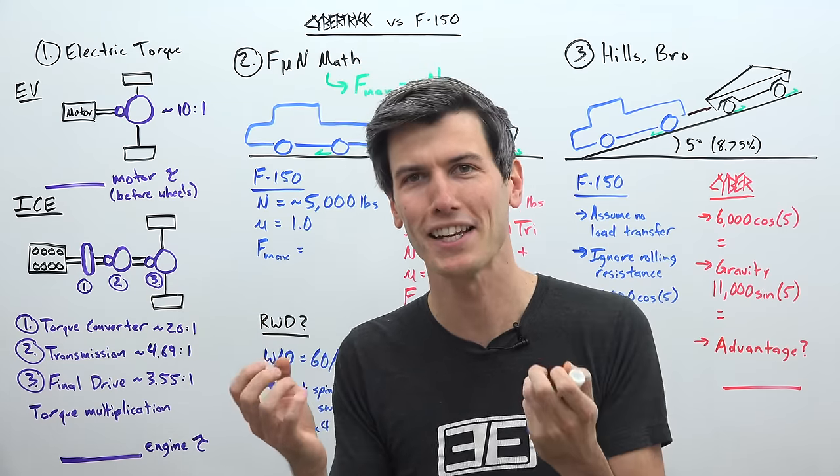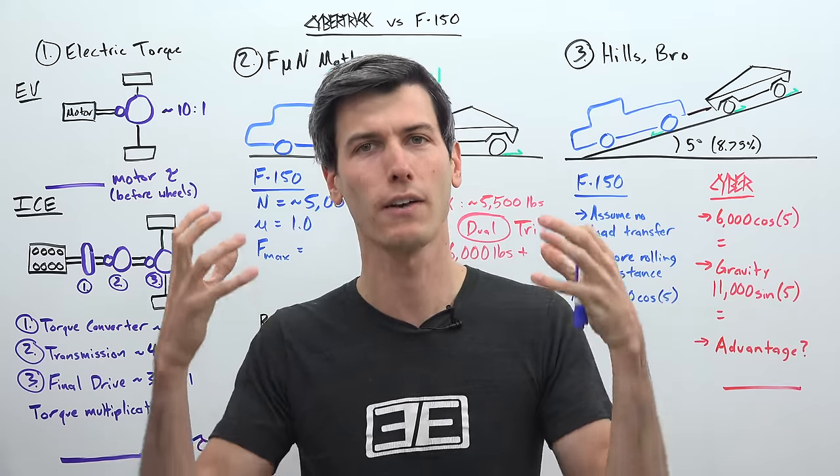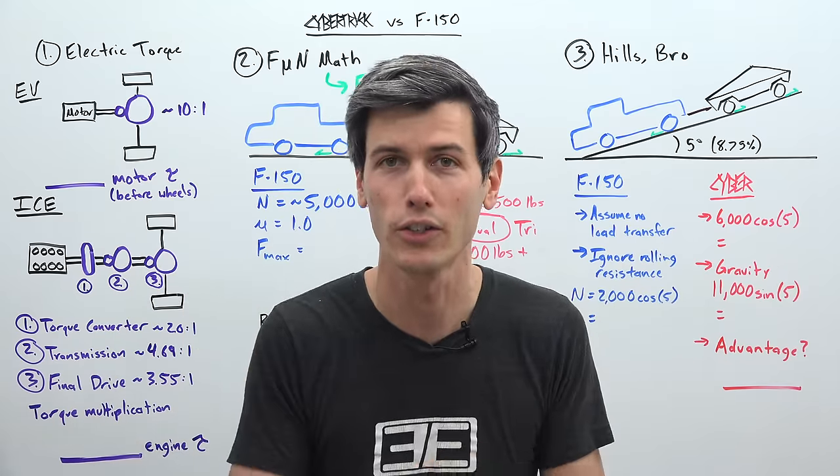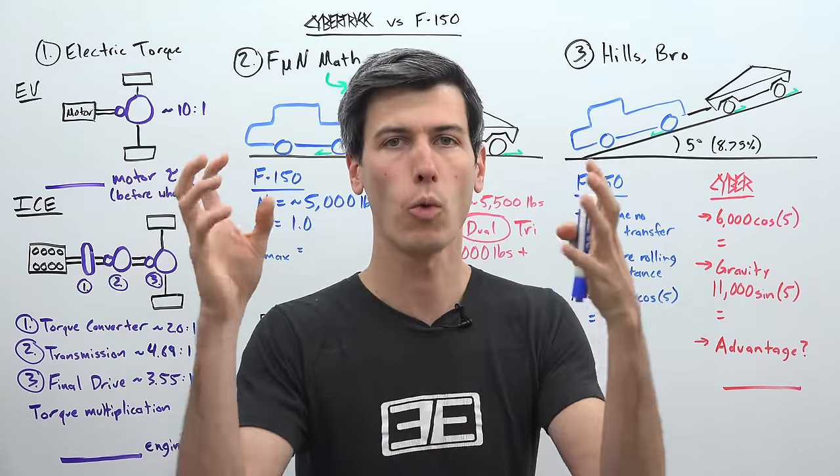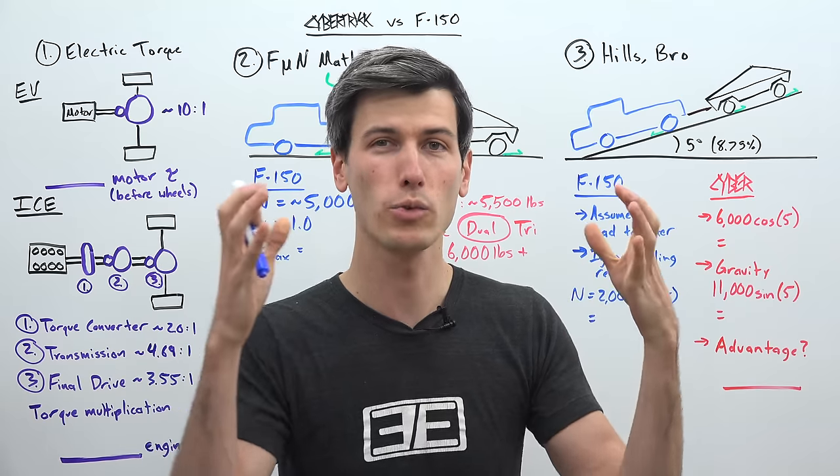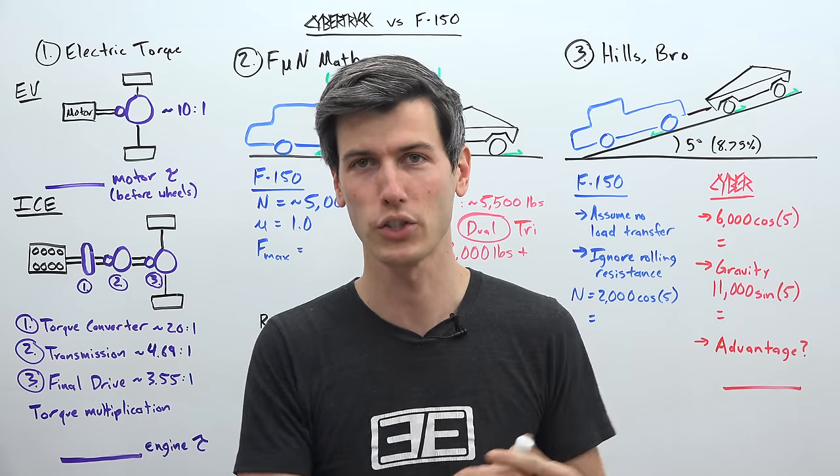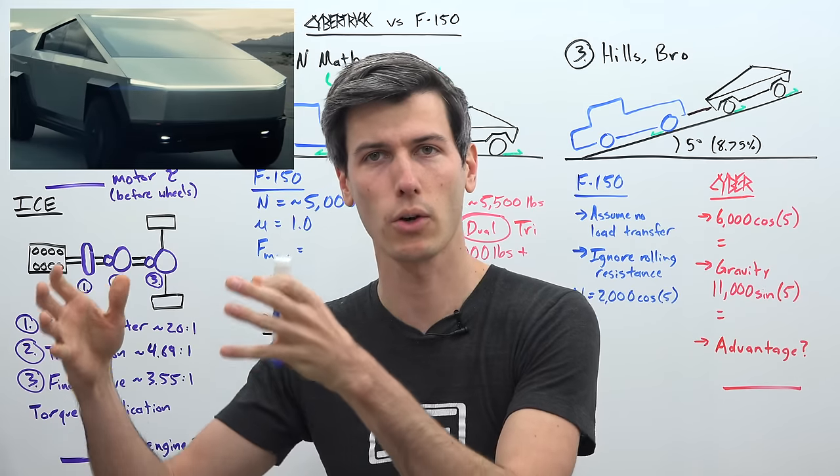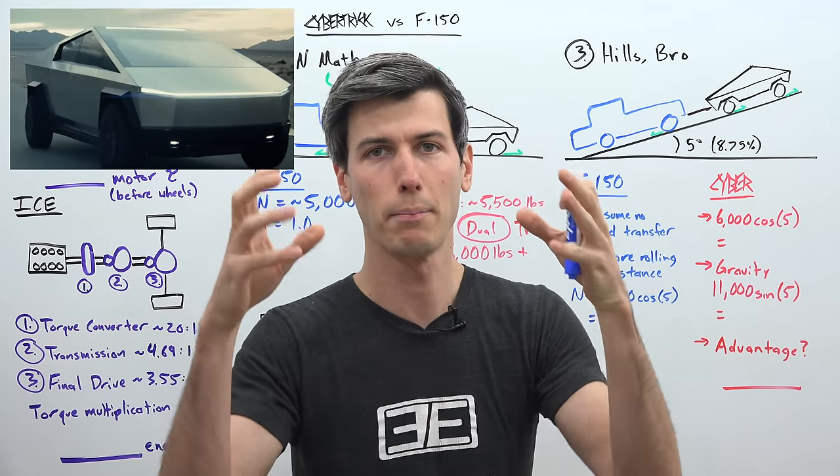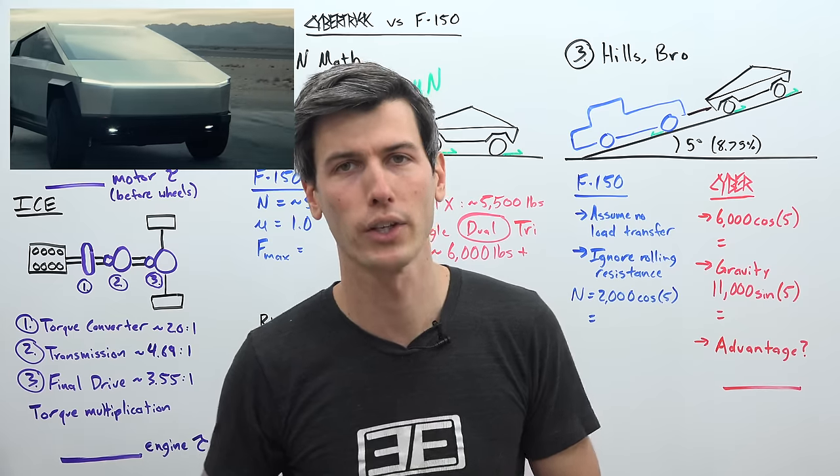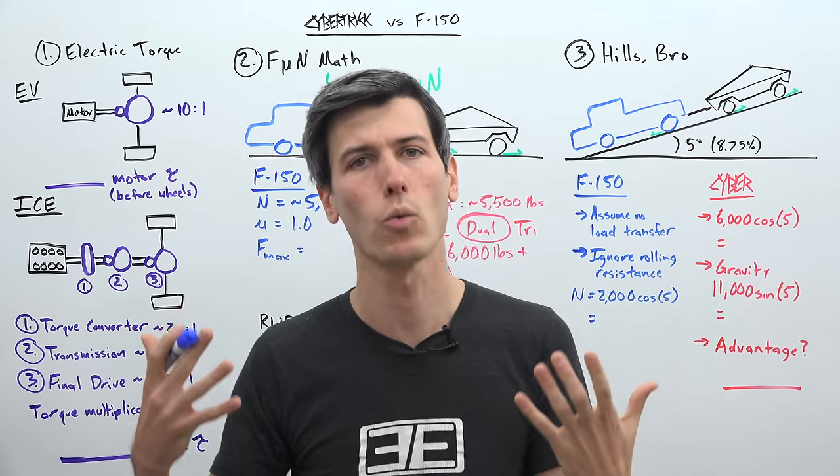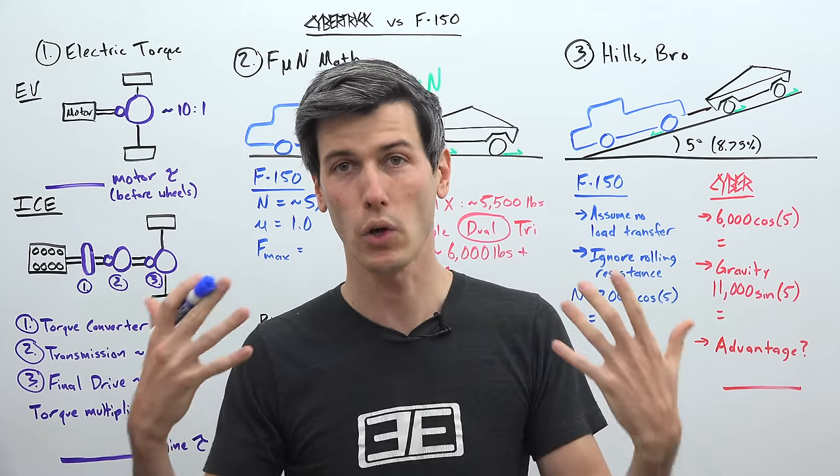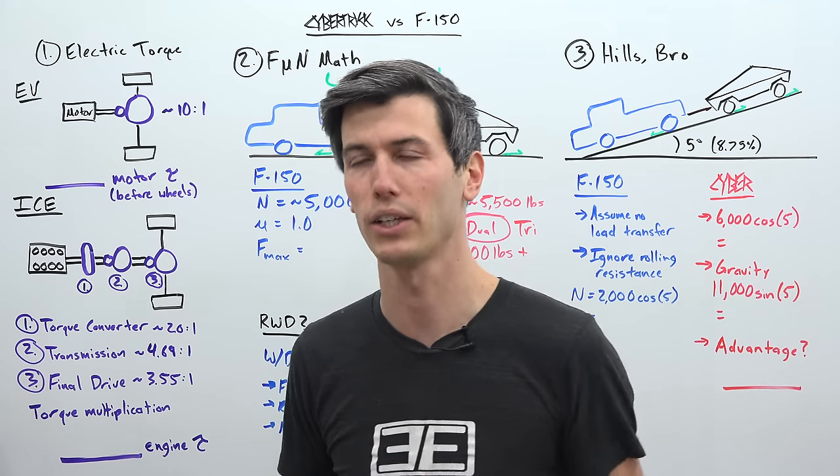And so to explain this, you need to understand that the torque that a vehicle is actually putting to the ground starts at that engine, and then it works its way through some gears, and those gears multiply the torque before it ultimately reaches the ground. This happens with electric cars as well. You start with that electric motor, it passes through some gears, and then eventually it reaches the ground. These gears are what give you your wheel torque, which is ultimately the force that's going to be accelerating you forward.